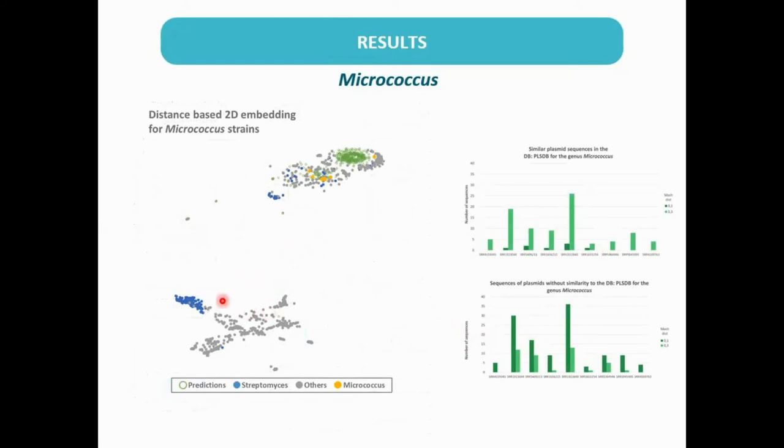And in the distance graph, we again saw two large groups, where most of our Micrococcus predictions are in a compact group associated with the same group of Actinobacteria. A few predictions are more distantly related.